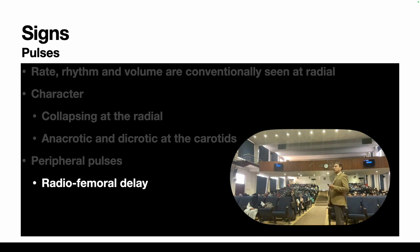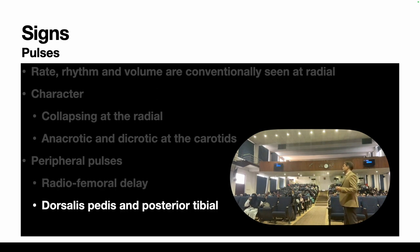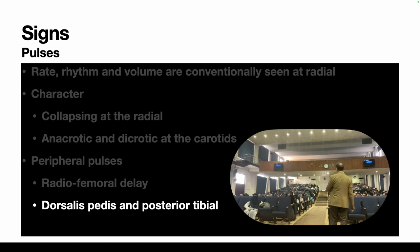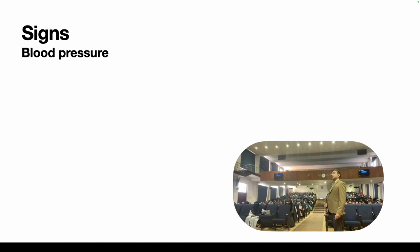Examine peripheral pulses and look for radiofemoral delay. Radiofemoral delay is assessed for coarctation of the aorta, which is diagnosed in younger subjects — unlikely in patients over 50 years. Also examine the dorsalis pedis, posterior tibial, and abdominal aorta.